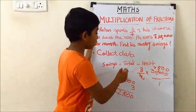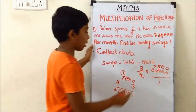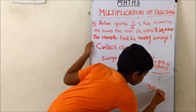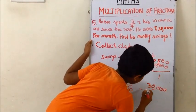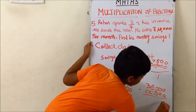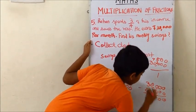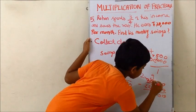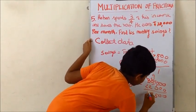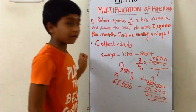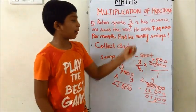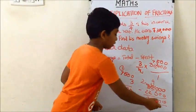The next step is to subtract the spent amount from the total amount. 30,000 minus 22,500. The answer we got is 7,500. So his monthly savings is 7,500.